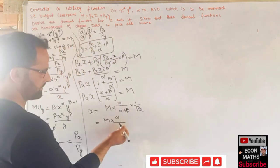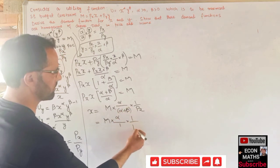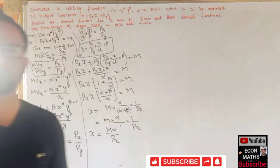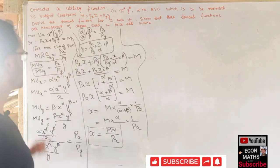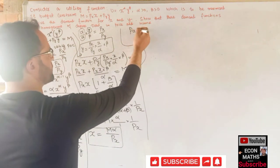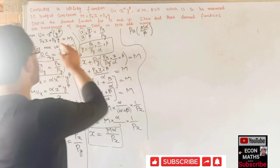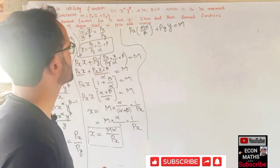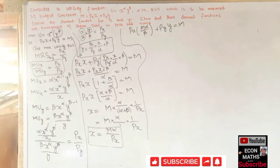So the demand function for x is x* = M*α / Px. Now to find the demand function for y, we substitute the value of x back into the budget constraint. We have Px*(Mα/Px) + Py*y = M, and the Px terms cancel, giving M*α + Py*y = M.